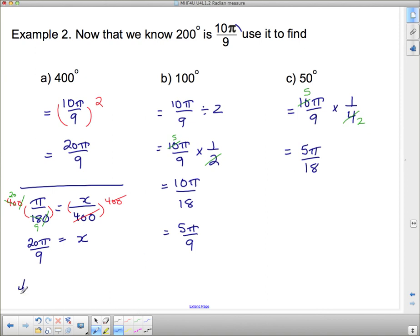Or if you wanted to type in 400 over 180 on a calculator that does fractions, that would get you to the same spot. Okay? But if you happen to know what something is already, what some multiple is already, there's no harm in using that to figure out what the other ones are.